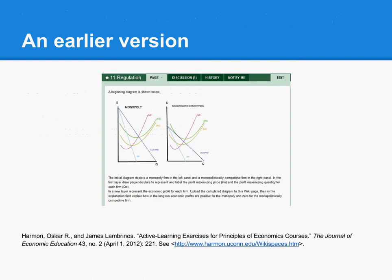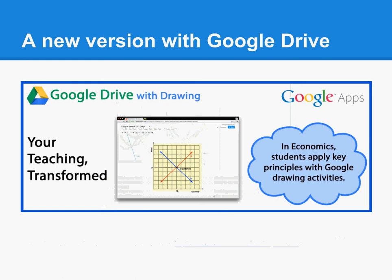An earlier version of this activity used the web-based drawing tool SumoPaint.com to create graphs and the online bulletin board WikiSpaces.com to submit student work. While effective and free, the solution did require some coordination to distribute the exercises and for students to post work under a name that matched the course roster. Students also had to learn to use two new sites, and not all browsers were supported equally well by the external tools.